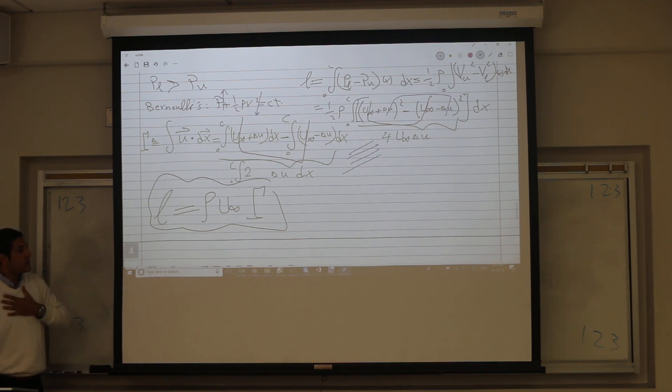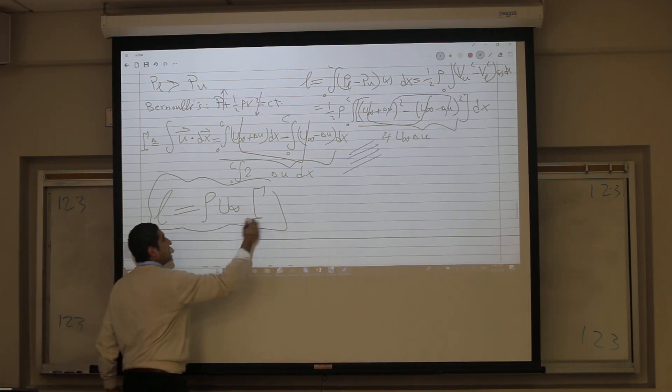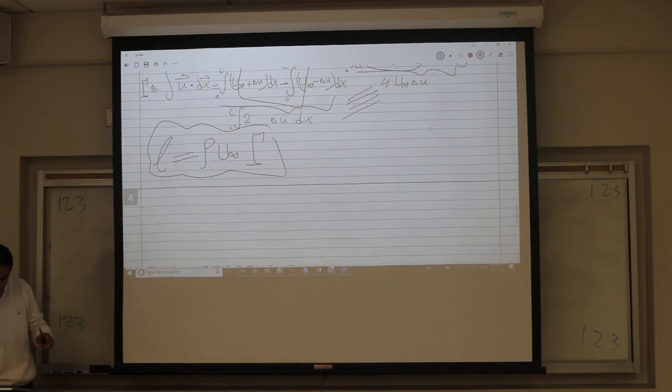So we immediately get this equation: the lift is rho, u infinity, and gamma. This is the Kutta-Joukowski theorem. So now to me, lift is circulation. Lift is mainly due to circulation. Your capability of forcing the flow to circulate will create lift.